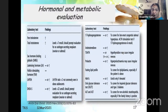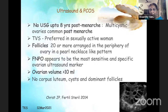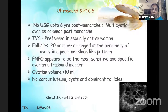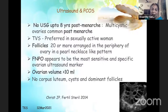No ultrasound up to eight years post-menarche, because multicystic ovaries are common post-menarche. If sexually active, TVS is preferred. Follicles — 20 or more arranged in the periphery of the ovary in a pearl-necklace-like pattern — earlier the threshold was 12 follicles, but per 2018 guidelines it is now 20 follicles. Follicle number per ovary is the most sensitive and specific ovarian ultrasound marker. Ovarian volume more than 10 ml is also important. No corpus luteum, no cysts, and no dominant follicles should be present.